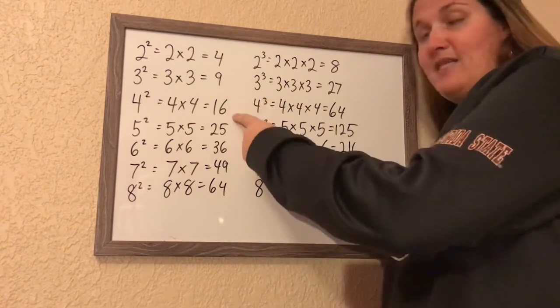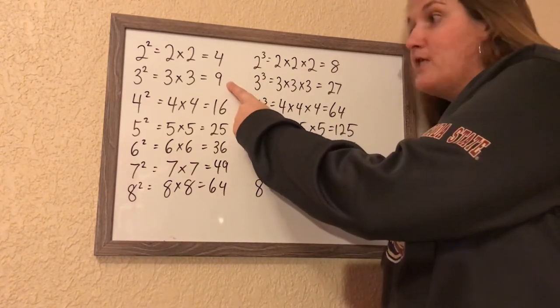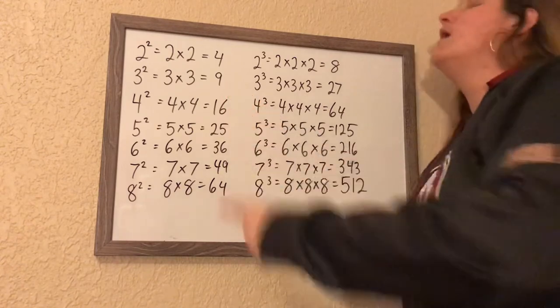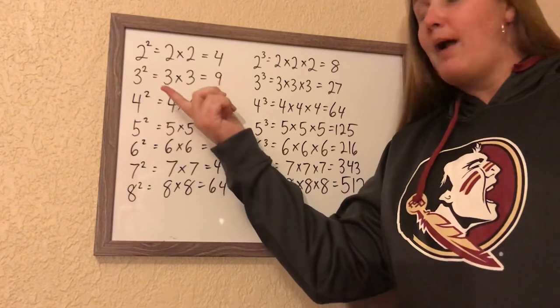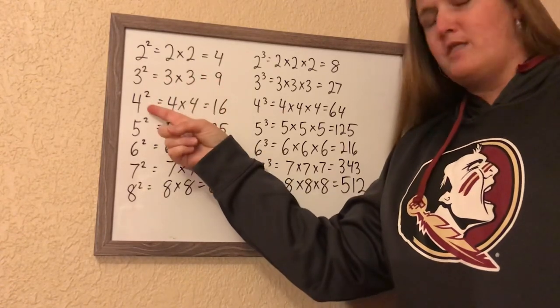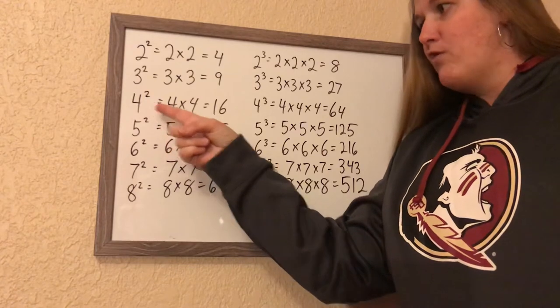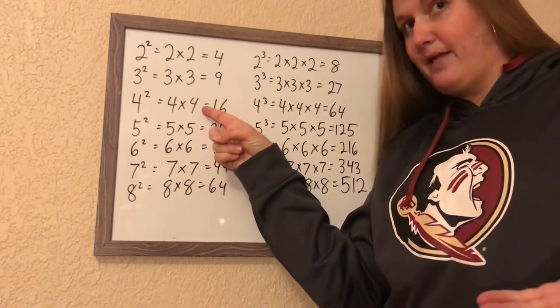Well, 10 is between 9 and 16, right? And it's closer to 9. So I would assume that the square root of 10 would be 3 point something, probably closer to 3.1 or 3.2 than it would be to 3.9 because 3.9 would give you an answer probably more around 15.